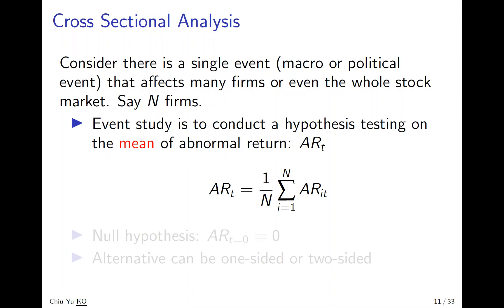So the event study to conduct is to consider the mean return of all N firms affected. So basically just the average of them. So basically just adding all up and divided by N, and the hypothesis done is the same, just test whether null hypothesis is equal to zero, or alternative also can be one-sided or two-sided.